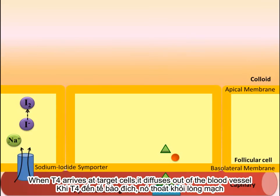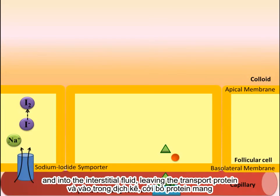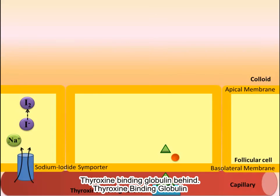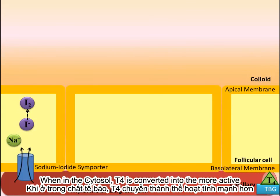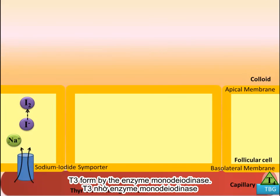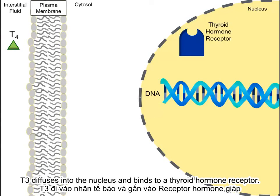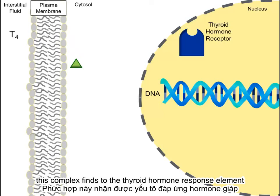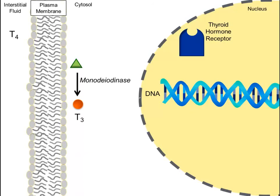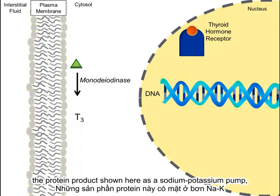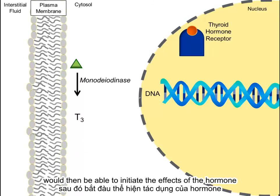When T4 arrives at a target cell, it diffuses out of the blood vessel and into the interstitial fluid, leaving the transport protein thyroxine-binding globulin behind. The T4 then diffuses across the plasma membrane. Once in the cytosol, T4 is converted into the more active T3 form by the enzyme monodeiodinase. T3 then diffuses into the nucleus and binds to a thyroid hormone receptor. This complex binds to the thyroid hormone response element and initiates nuclear transcription and cytosolic translation. The protein product, shown here as a sodium-potassium pump, is then able to initiate the effects of the hormone.